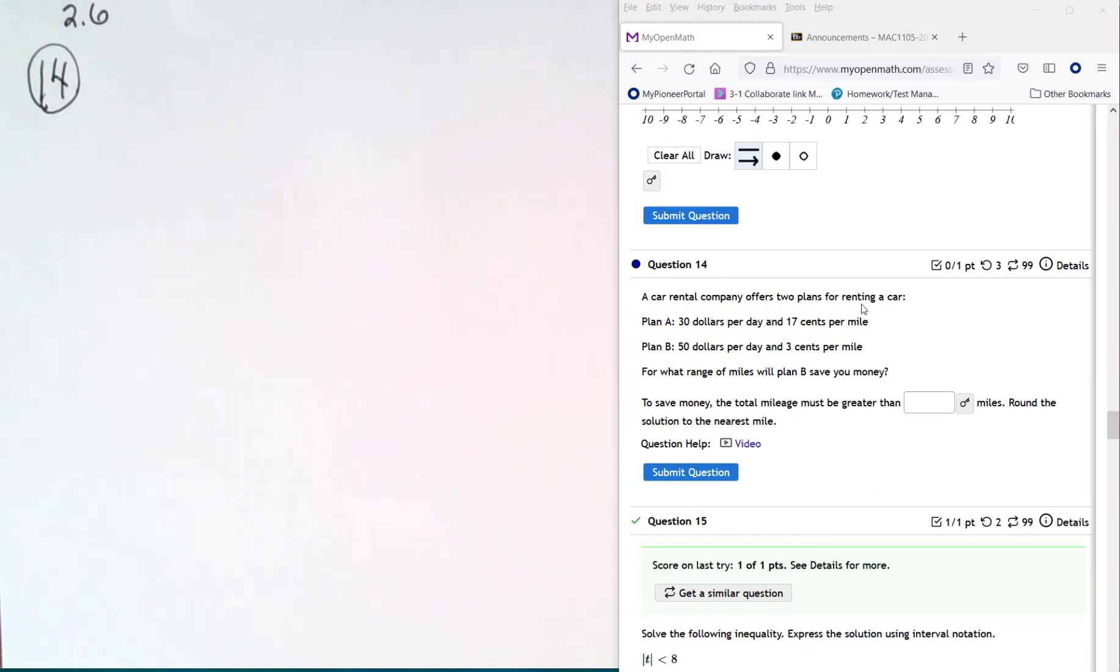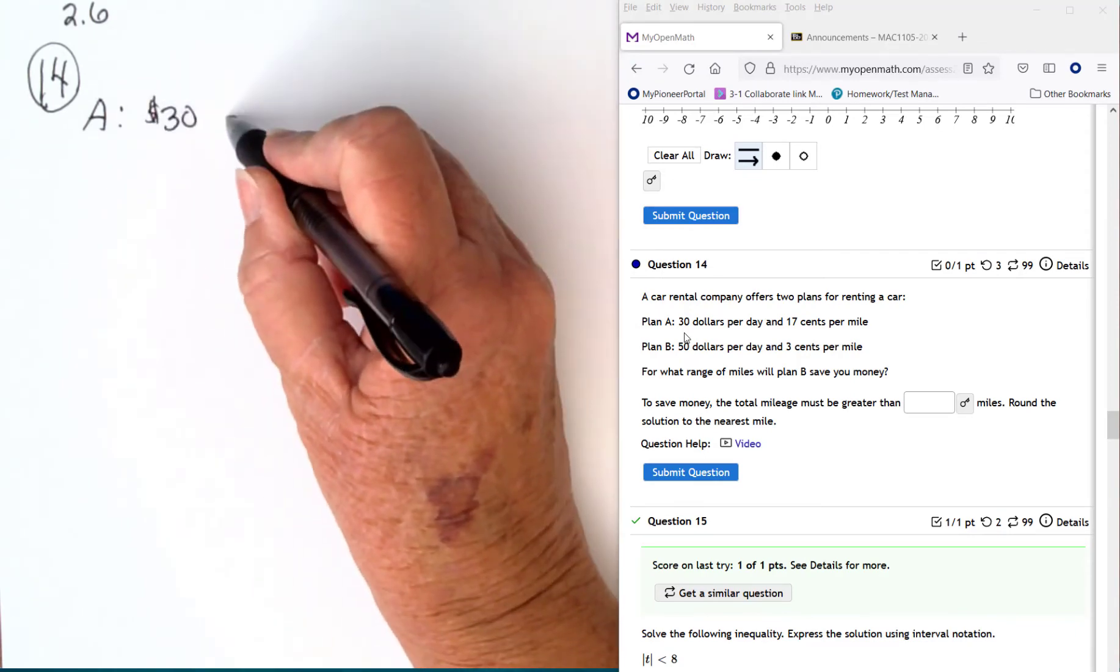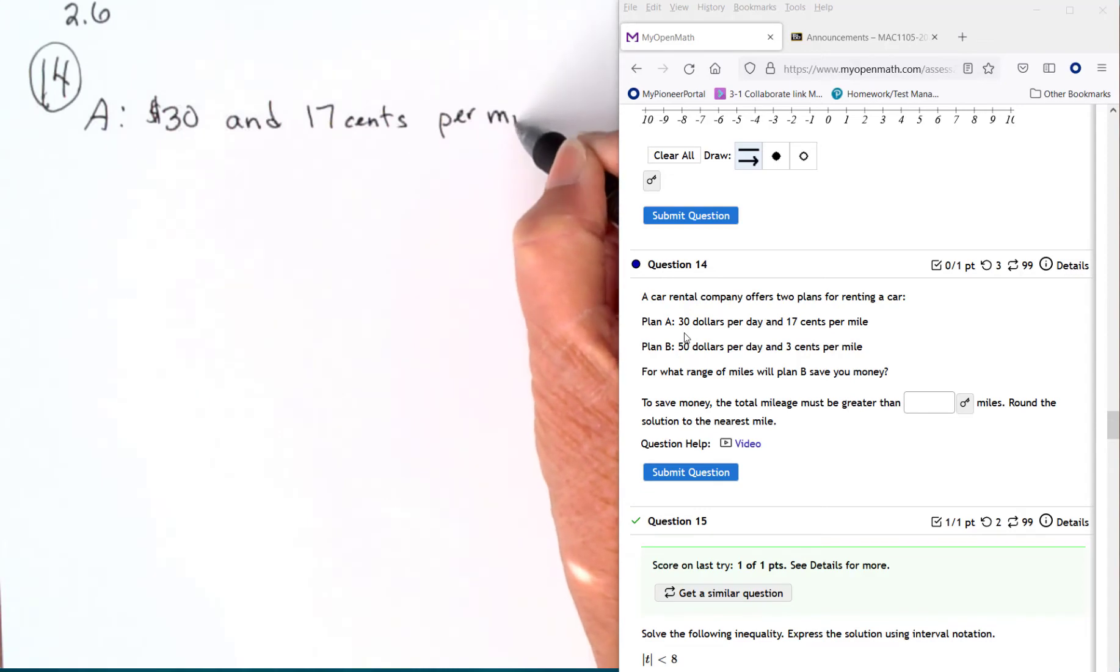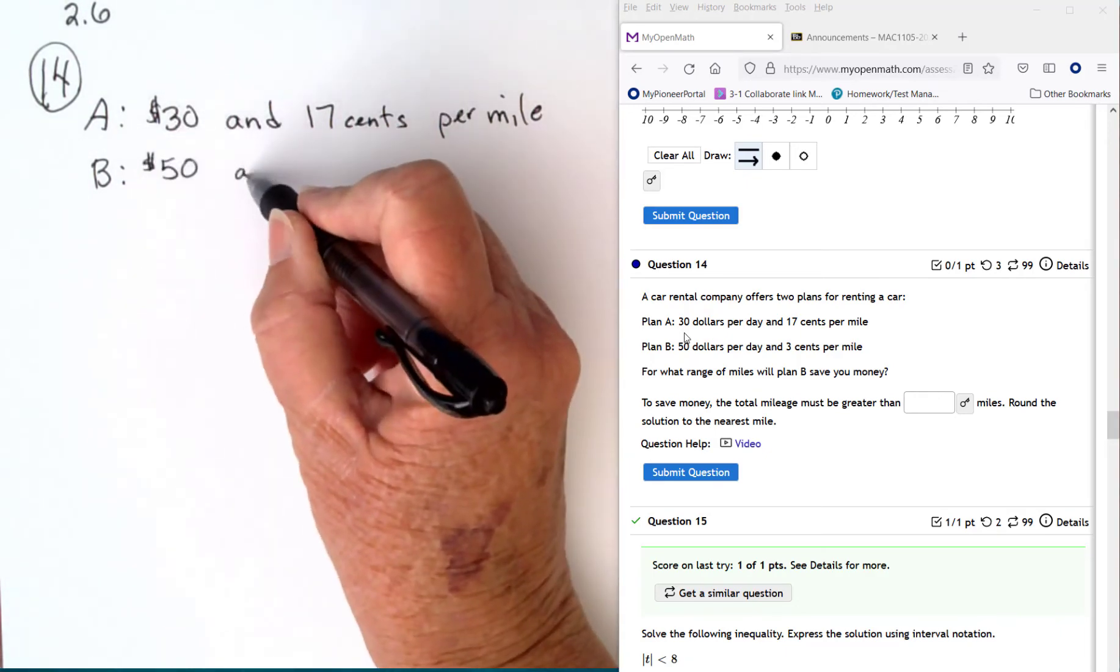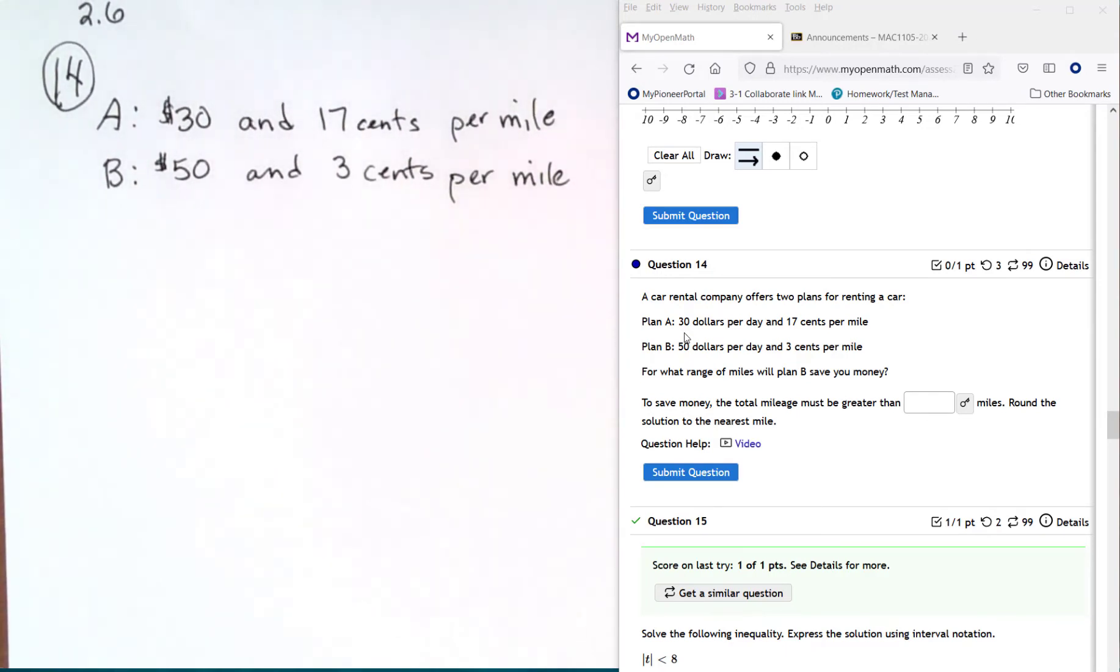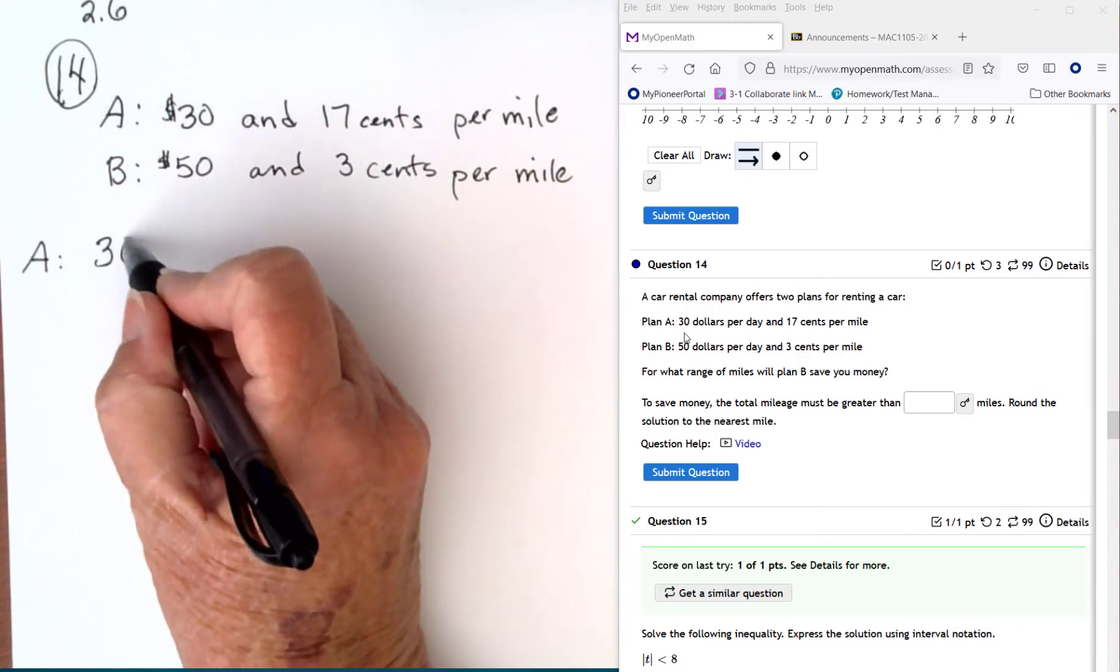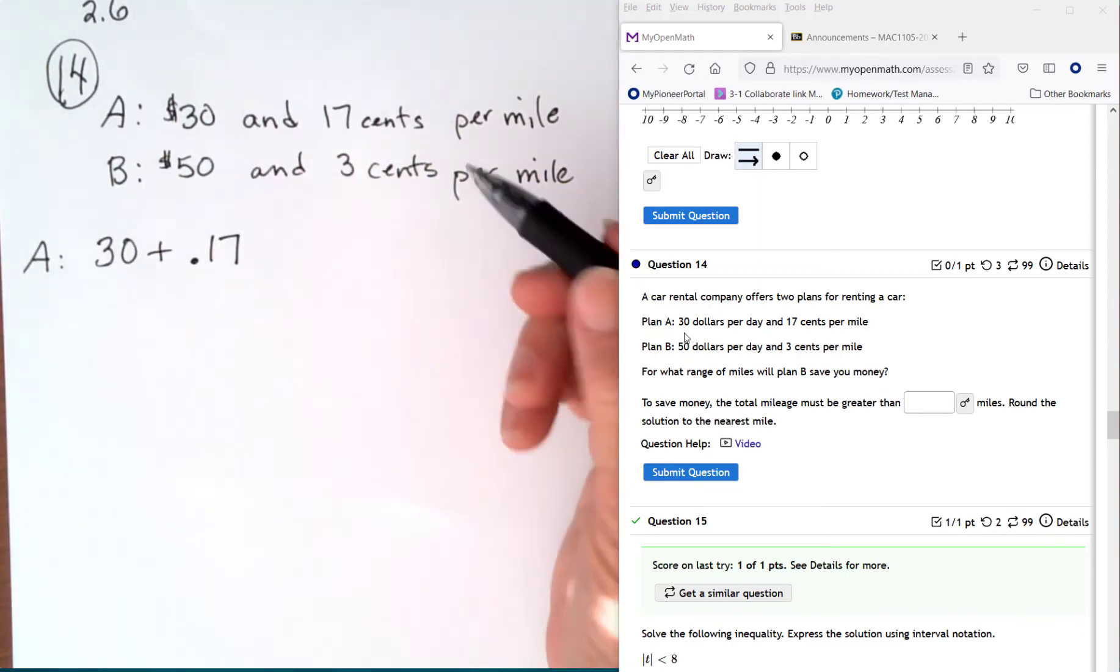So a car rental company offers two plans for renting a car. Plan A is $30 per day and 17 cents per mile. Plan B is $50 per day and 3 cents per mile. For what range of plans will B save you money? So we want B to be smaller than A. So we'll get our expressions. So A is going to be $30 plus 17 cents. So switch that to dollar form, which would be 0.17. And we'll let x equal the number of miles.